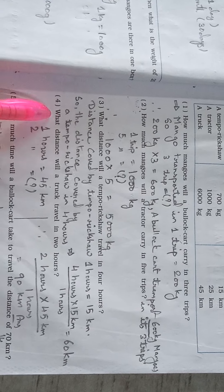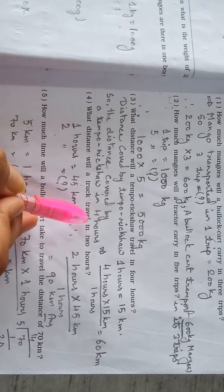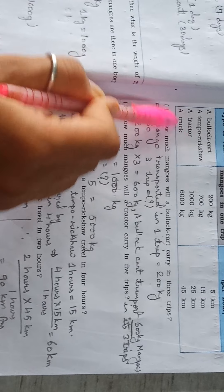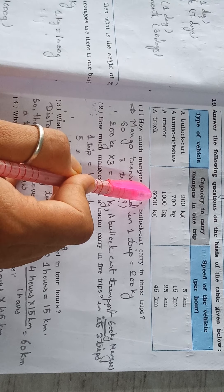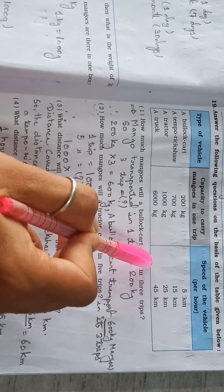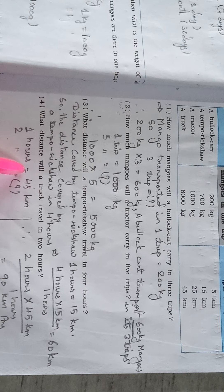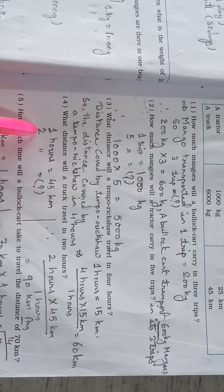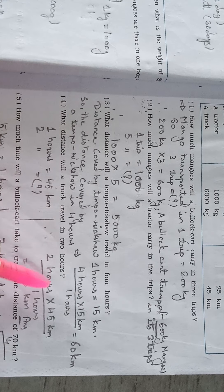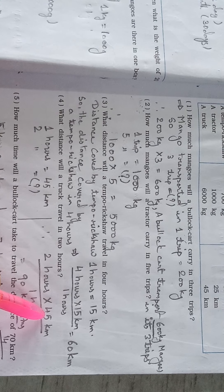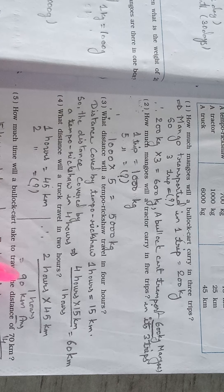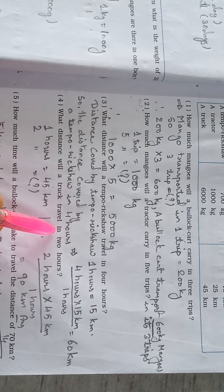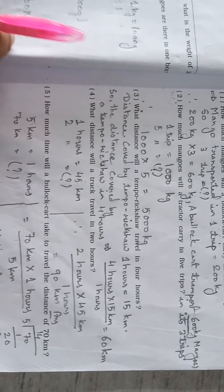Question number D: What distance will a truck travel in 2 hours? From the table, a truck carries 6000 kg per trip and travels 45 km in 1 hour. So in 2 hours, therefore 2 hours multiplied by 45 km divided by 1 hour equals 90 km. A truck travels 90 km in 2 hours. This is the answer.